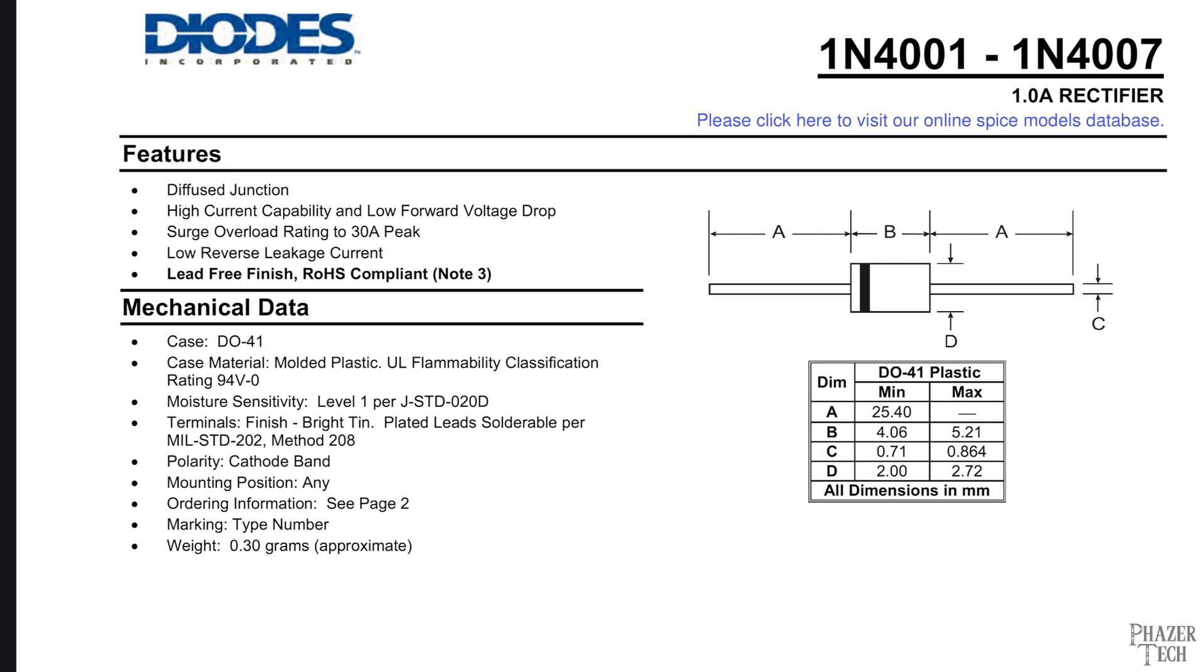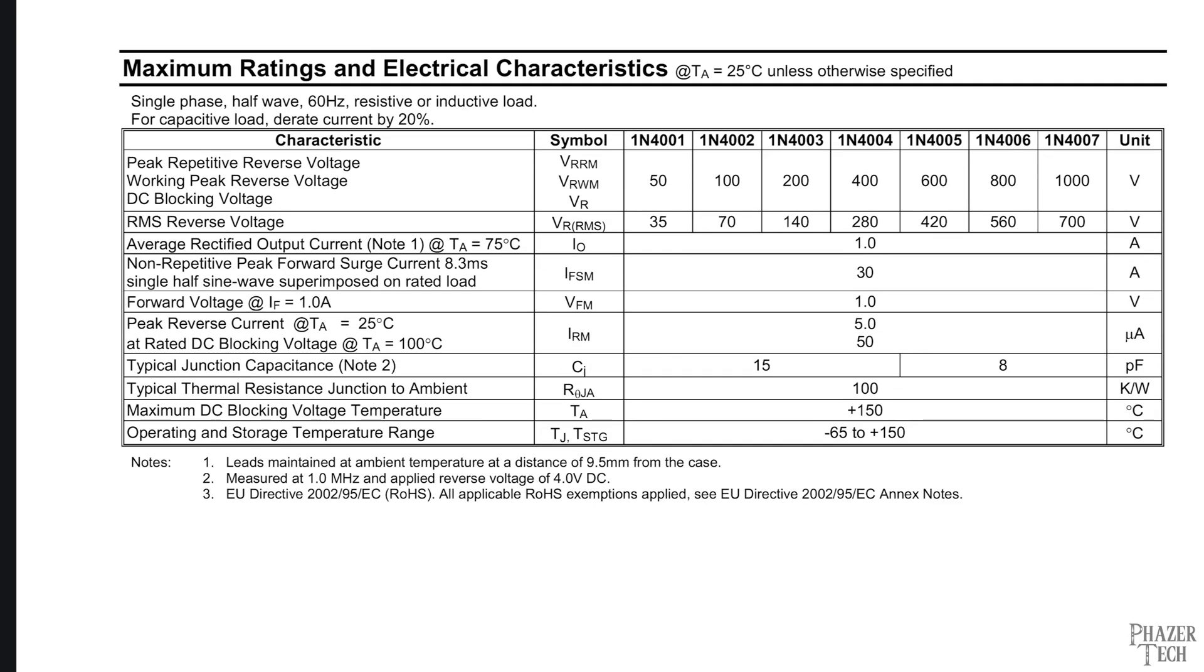These diodes are all extremely similar to each other with the main difference being their maximum reverse voltage. We can find that spec here labeled peak reverse voltage or blocking voltage, and this tells us the maximum DC voltage each diode can block in the reverse direction, while the RMS reverse voltage applies to AC voltages.